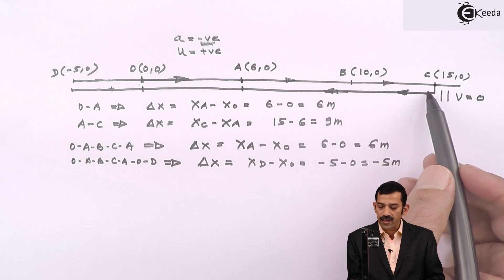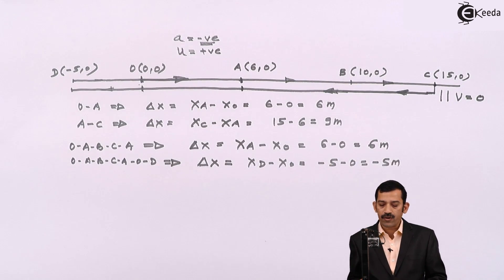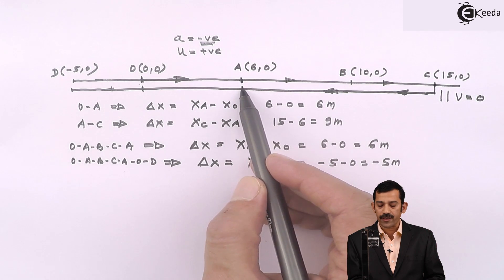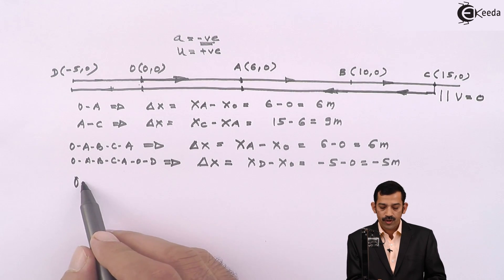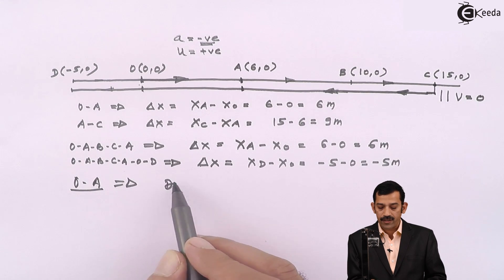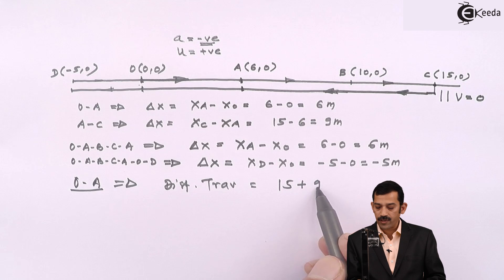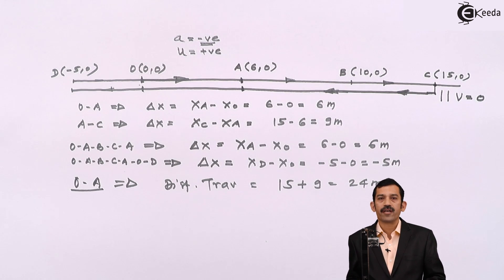If the particle changes its direction of motion — say it goes O → A → B → C, then reverses back to A — the distance traveled is different from displacement. From O to C is 15 meters, and from C back to A is 9 meters, so total distance traveled = 15 + 9 = 24 meters, which is different from the displacement.